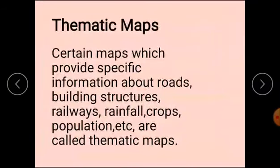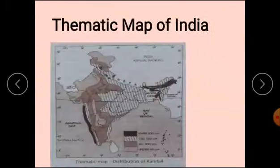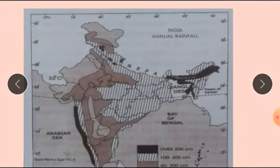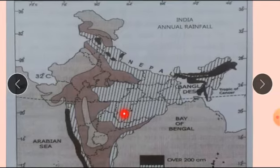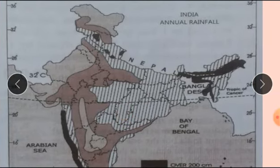Next, thematic maps. Certain maps which provide specific information about roads, buildings, structures, railways, rainfall, crops, population etc. are called thematic maps. Here you can see the thematic map.